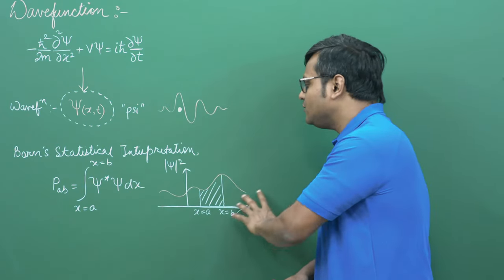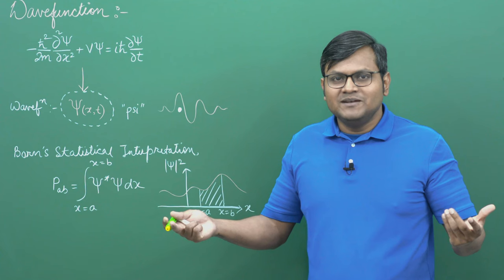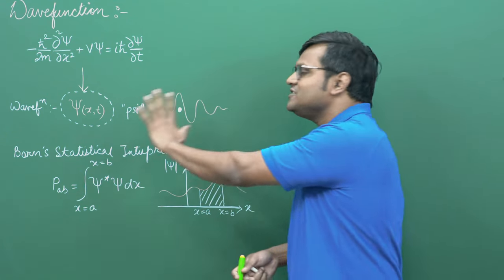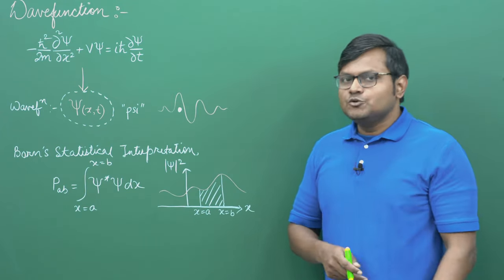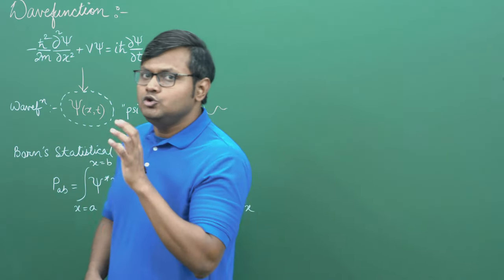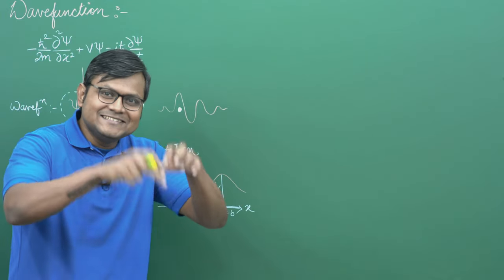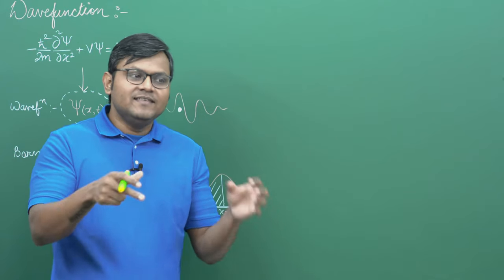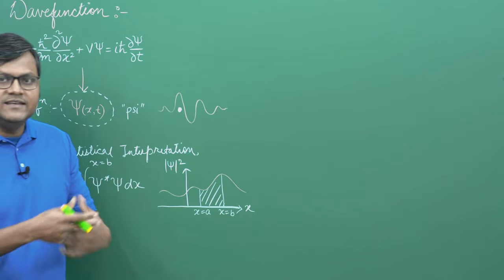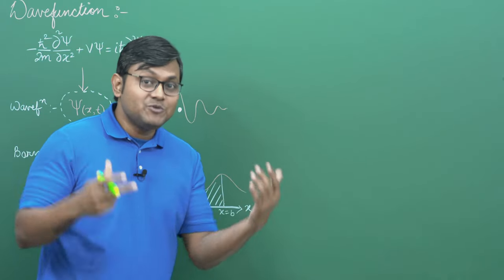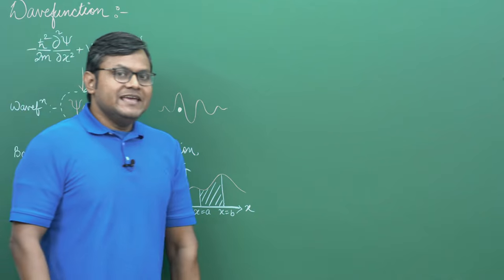Quantum mechanics gives a theoretical prediction of where the particle is most likely to be, but if you made a measurement you could find the particle anywhere. It's just that if you made a large number of measurements, most of the time the particles are concentrated wherever the amplitude is greatest. So the wave function turns out to be a pandora's box — it doesn't mean anything physically but contains a lot of information that we must extract. The entire quantum mechanical theory is about how we extract that information.